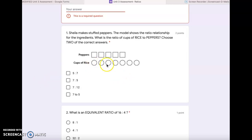So count how many circles there are to represent the rice, then count how many squares there are to represent the peppers. Rice to peppers. Your choices are 5 to 7, 7 to 5, 7 to 12, and 7 to 5. Choose two.